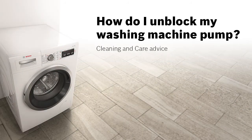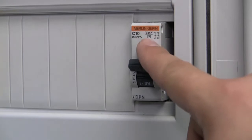How do I unblock my washing machine pump? If the machine is not pumping out the water properly, first turn off the appliance and disconnect the power.